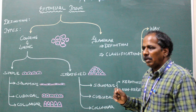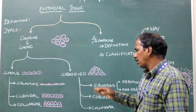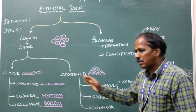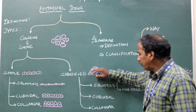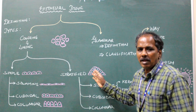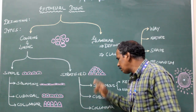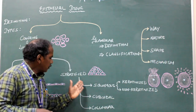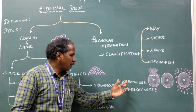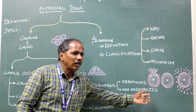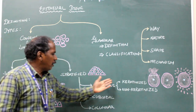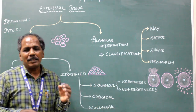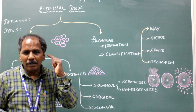Stratified epithelium contains more than two layers. If the uppermost layer cells are flat, it is called stratified squamous epithelium. If the superficial-most cells are cuboidal, it is called stratified cuboidal epithelium. Stratified squamous epithelium is divided into two types: keratinized and non-keratinized. Stratified squamous keratinized epithelium is pigmented. Example: skin and the outer surface of the tympanic membrane.